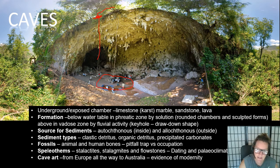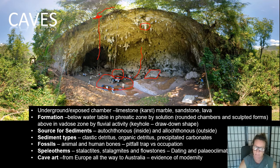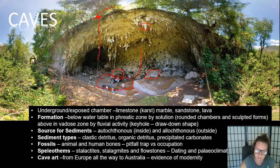We get speleothems: stalactites come down and stalagmites grow upwards - one drips to the other. We also get flowstones, where water runs down the side of the cave and forms flowstone over the top of sediments. These can be used for dating and paleoclimate. We also get cave art - especially in rock shelters in Australia, there's some amazing cave art.